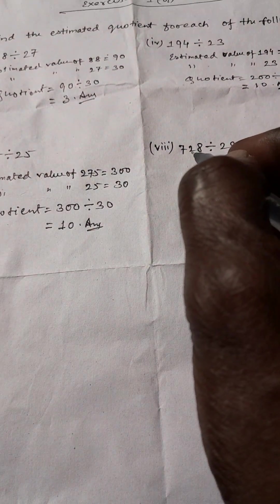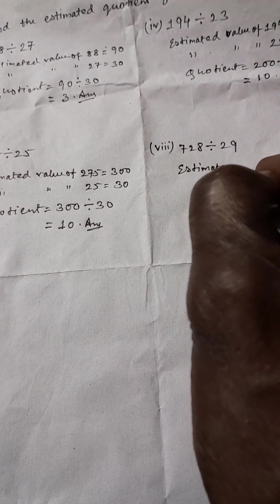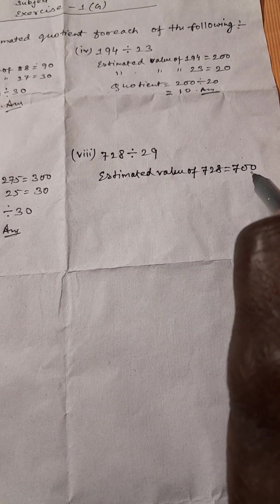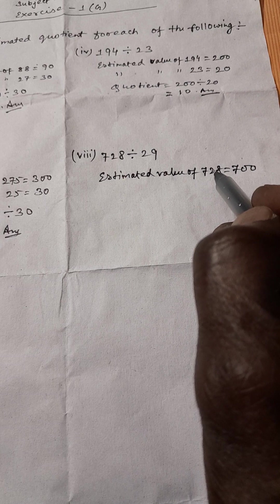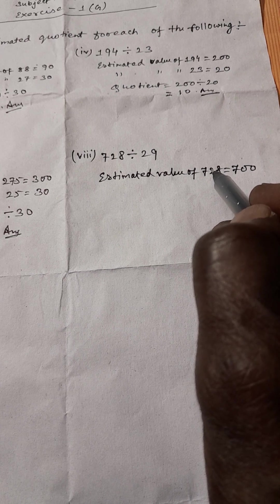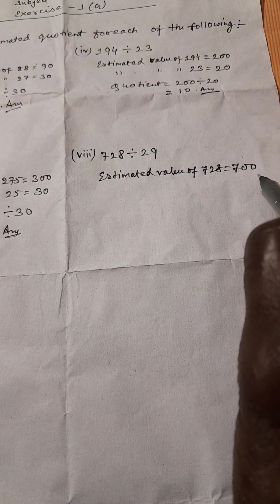Last one: question number 8. This is 728 divided by 29. The estimated value of 728 equals 700. Why? Because in the 10th place the value is 2, which is less than 5. So we do not increase this value; it remains the same and we put 0. So the estimated value of 728 is 700.